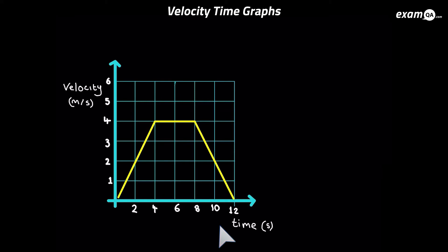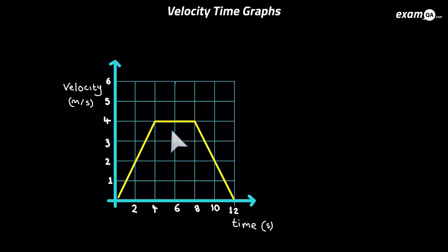So what can we say about this graph? In the first four seconds the velocity is increasing, so we know there's acceleration here. Then the velocity stays the same, so there's zero acceleration, and then the velocity starts decreasing, meaning there's deceleration here.